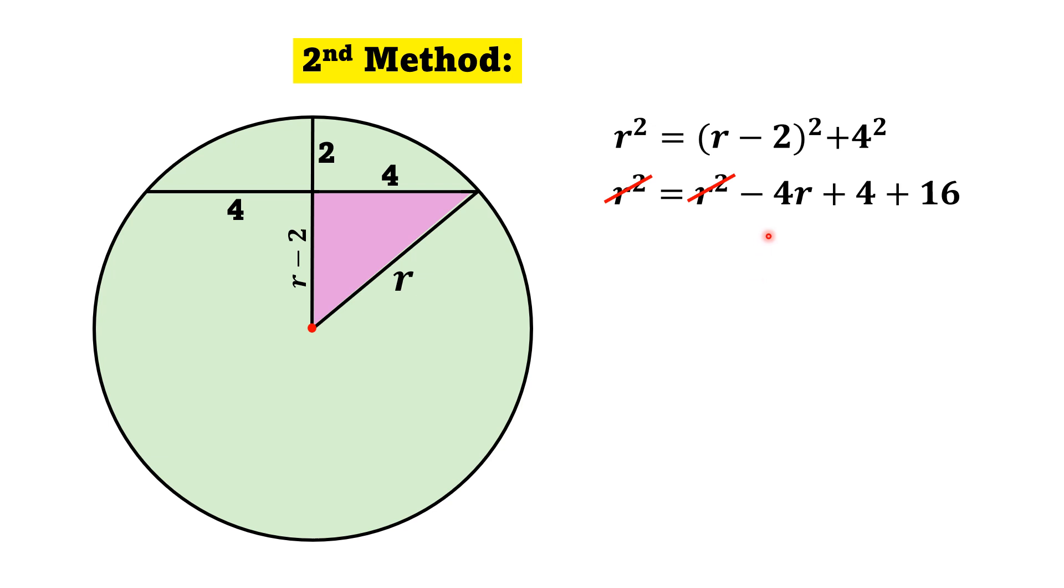Taking this minus 4R towards the left, we will get 4R is equal to 20. And from here, R is equal to 5.